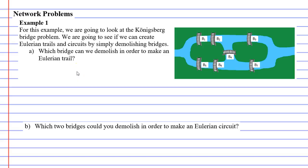In this video we're going to complete Example 1. For this example, we're going to look at the Königsberg bridge problem and see if we can create Eulerian trails and circuits by simply demolishing bridges. When we're talking about Eulerian trails and circuits, we mean passing every bridge only once.